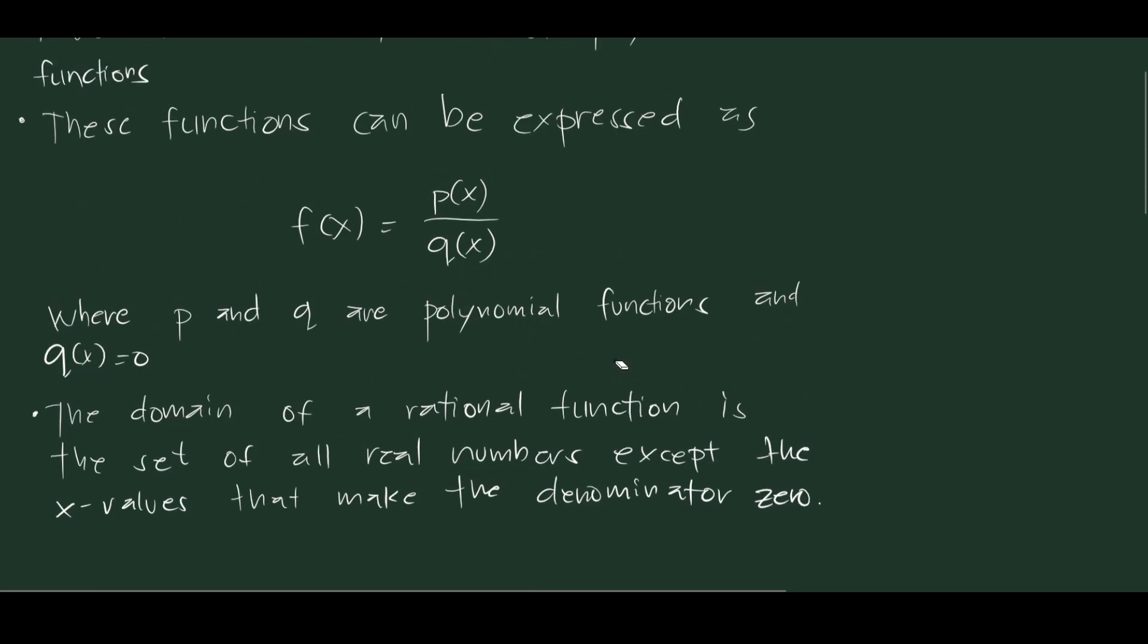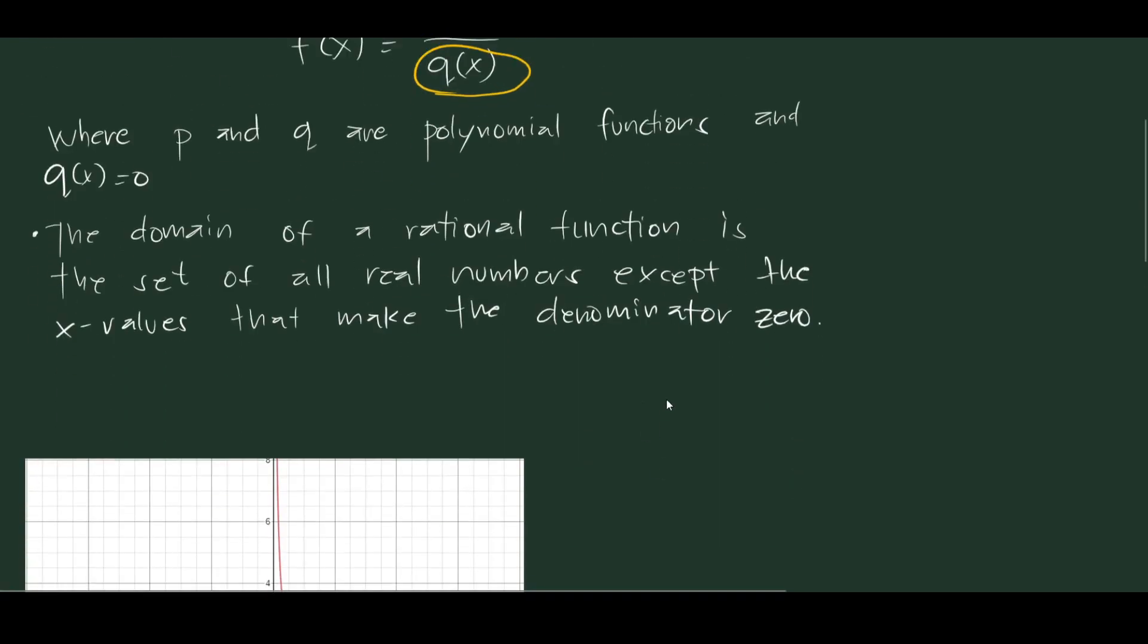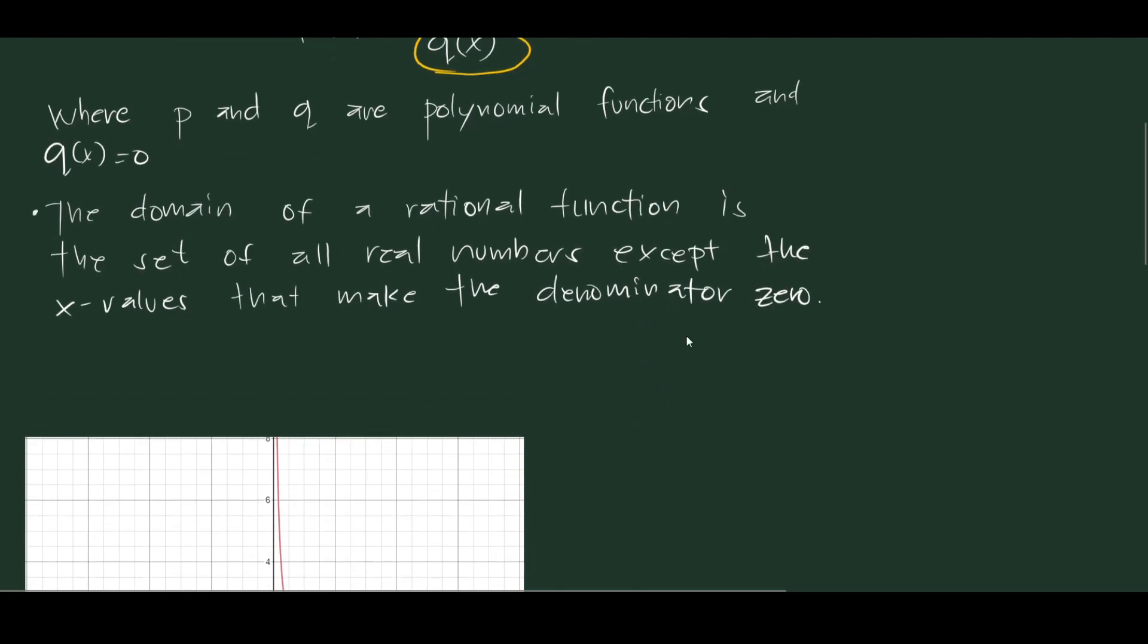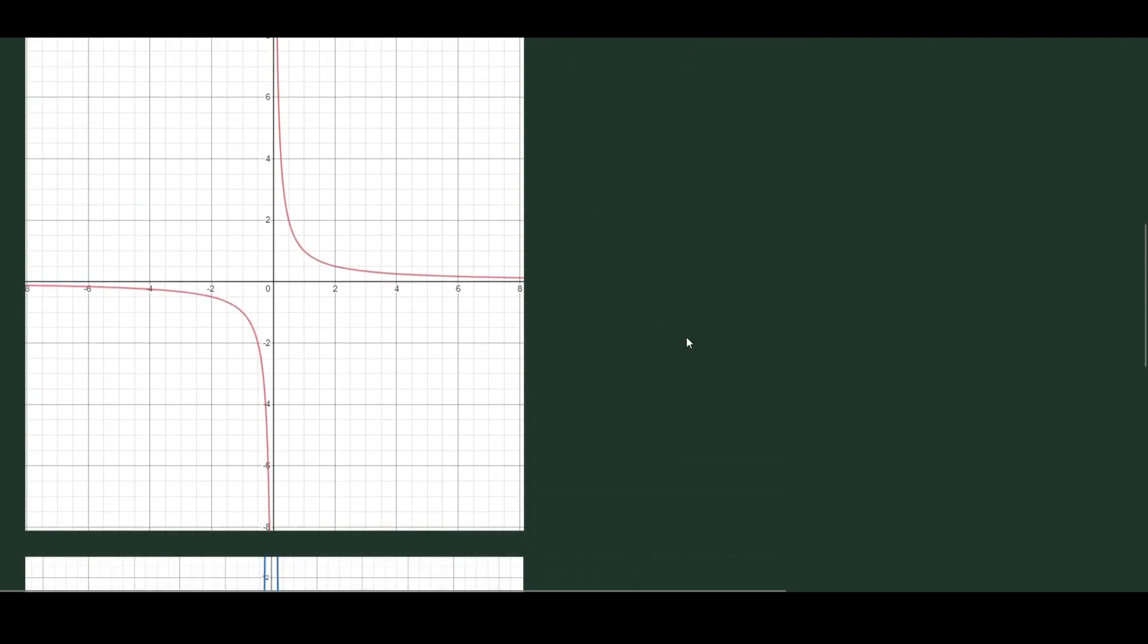Now, the domain of a rational function is the set of all real numbers except the x values that make the denominator zero. So the set of all real numbers except the x values that make q(x) equal to zero. We will take that into account, especially when finding the vertical asymptotes later on.